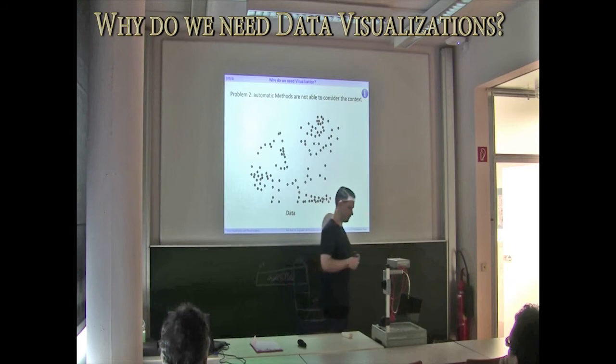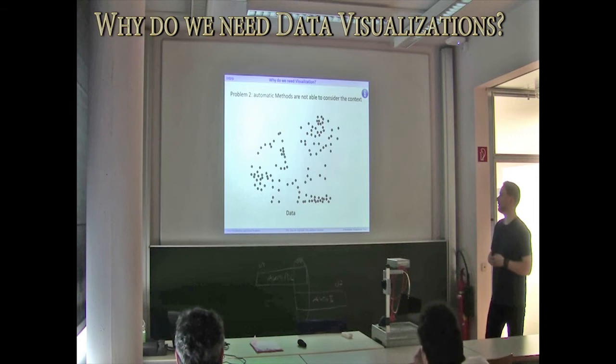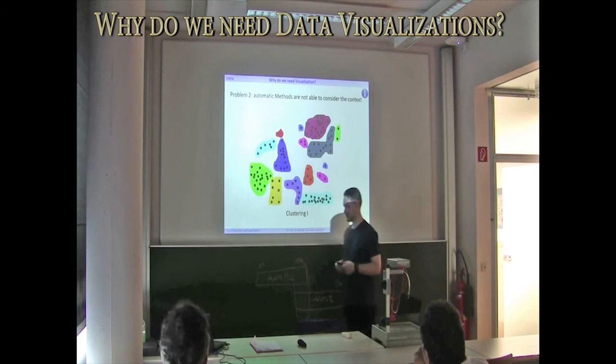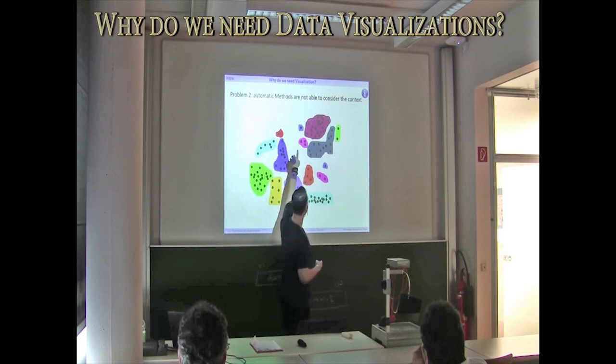The so-called automatic approaches are only aware of the data, not the context. They know nothing about your domain, your biologic data, or other aspects. For instance, we can have a certain automatic approach, let's say clustering, with a certain parameterization, and we get this clustering result: some nice clusters, compact, non-compact, some outliers.